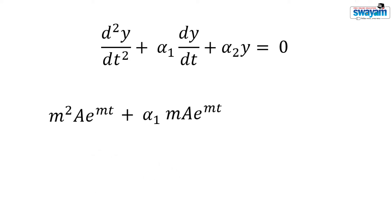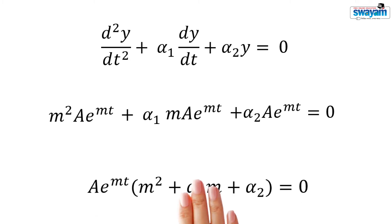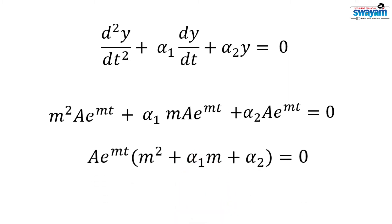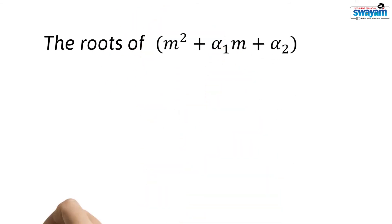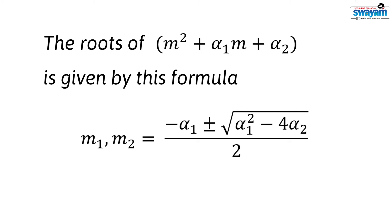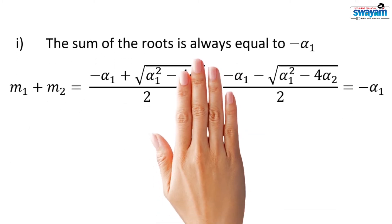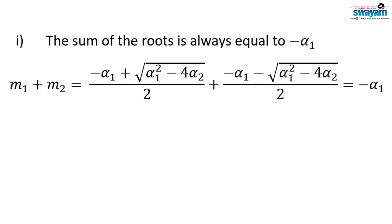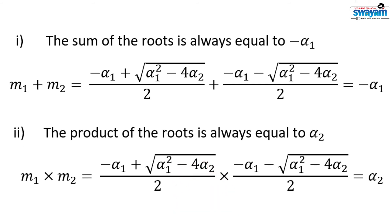Substituting the values in the homogeneous equation and simplifying, we get a·e^(mt) times (m² + α₁·m + α₂) equal to 0. Note that the expression in brackets is a quadratic equation, and the roots are given by using the quadratic formula. There are two interesting relationships between the two roots: the sum of the roots is always equal to minus α₁, and the product of the roots is always equal to α₂.